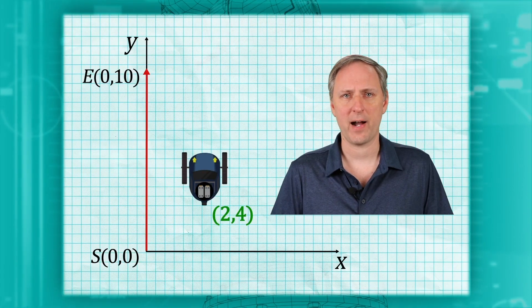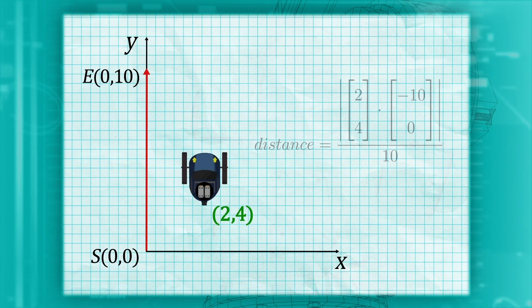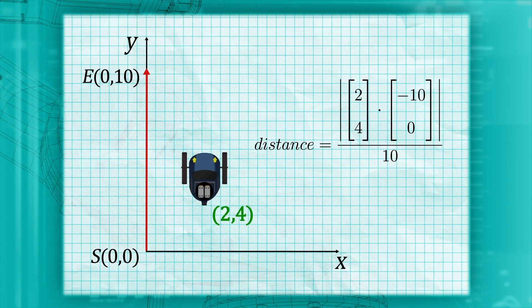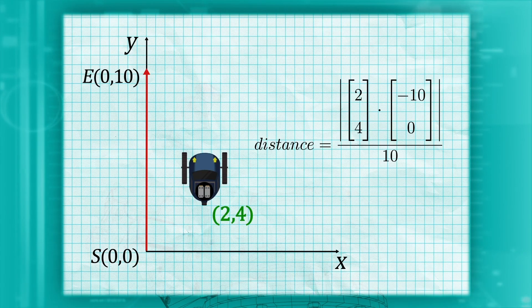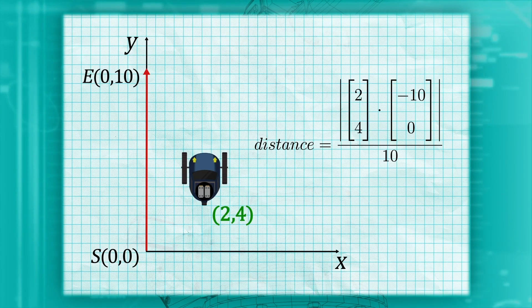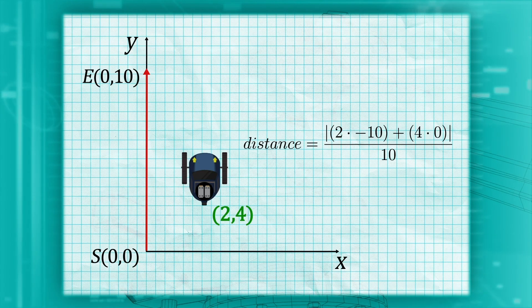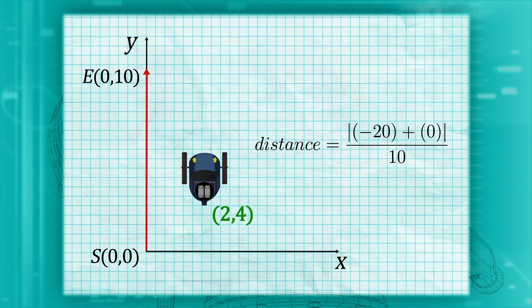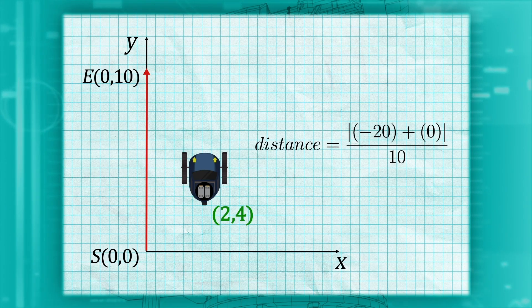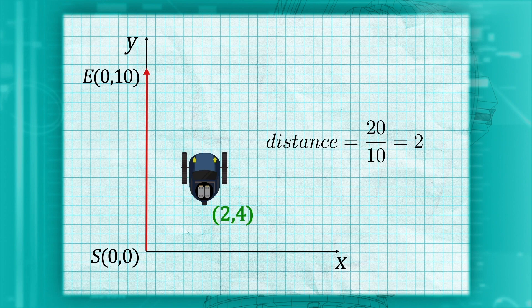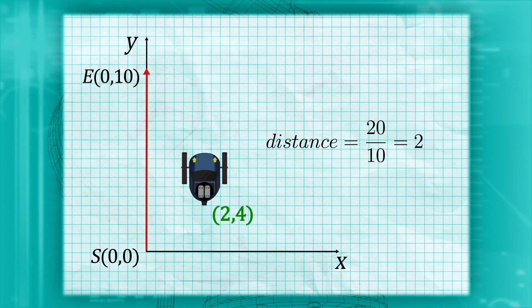Now we have everything we need to find the distance. Evaluating the numerator, we perform the dot product, multiplying 2 by negative 10, and adding the product of 4 and 0. We get the absolute value of negative 20 plus 0, which is 20. Divided by 10 gives us 2. So we have calculated that we are 2 meters from the line.